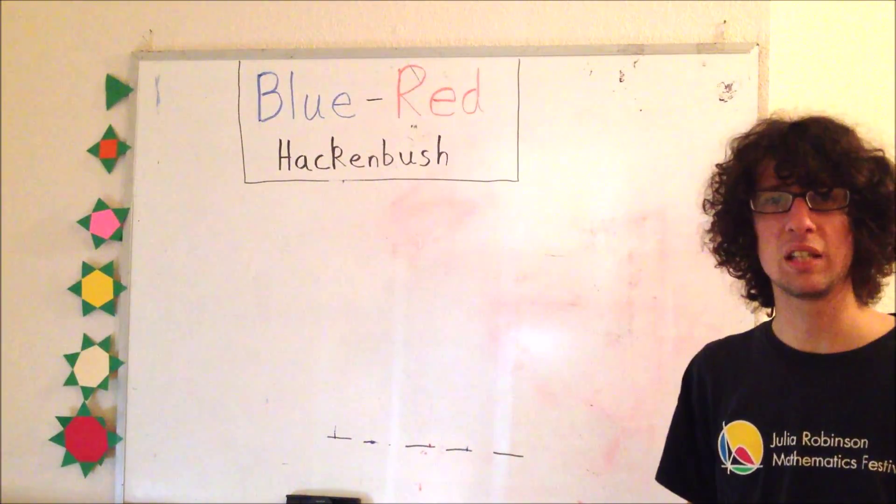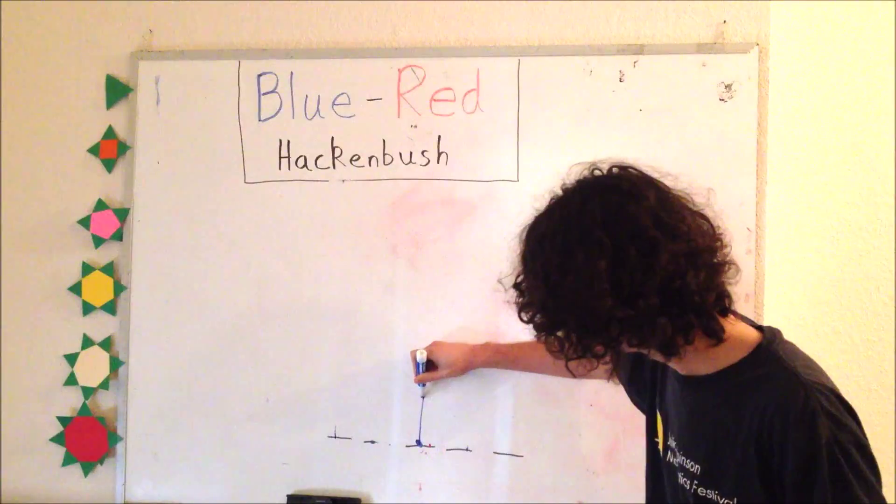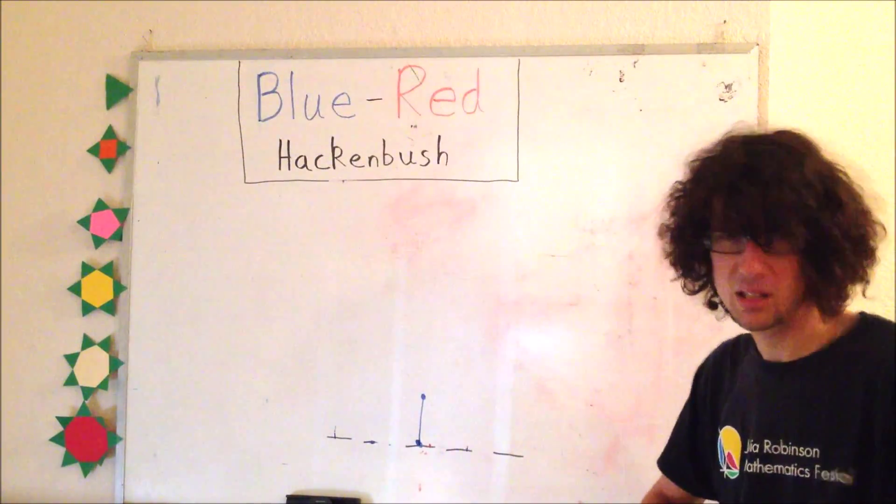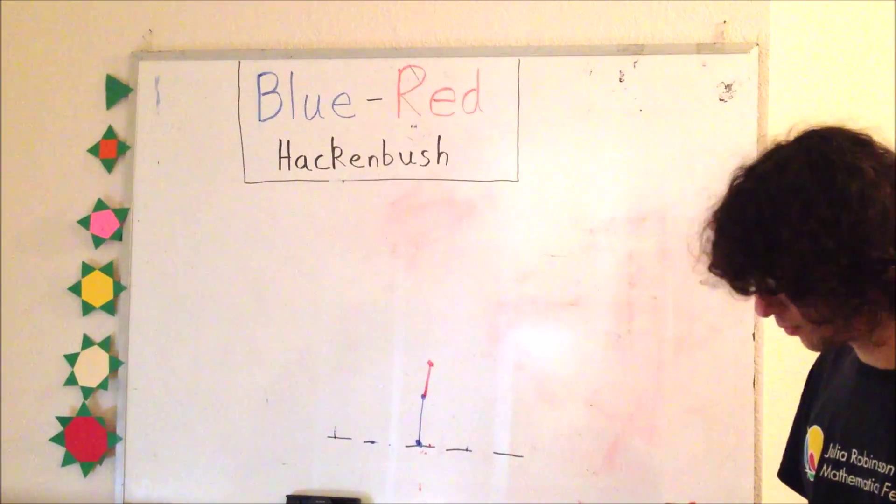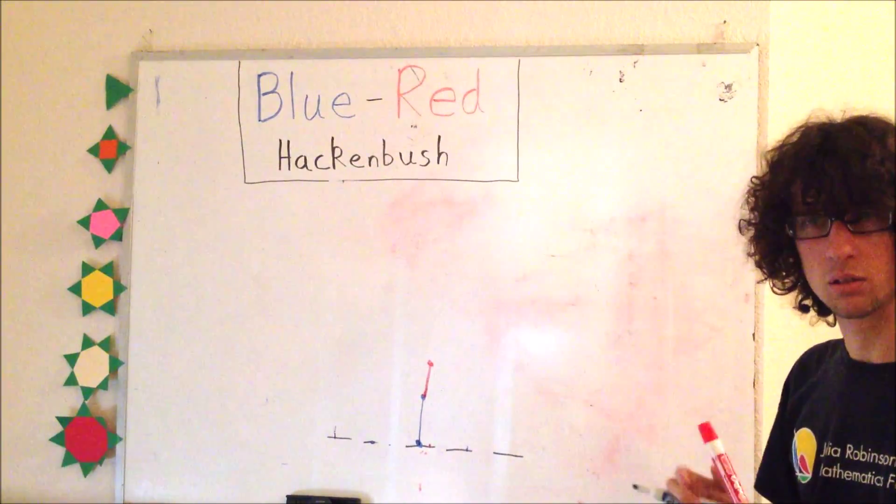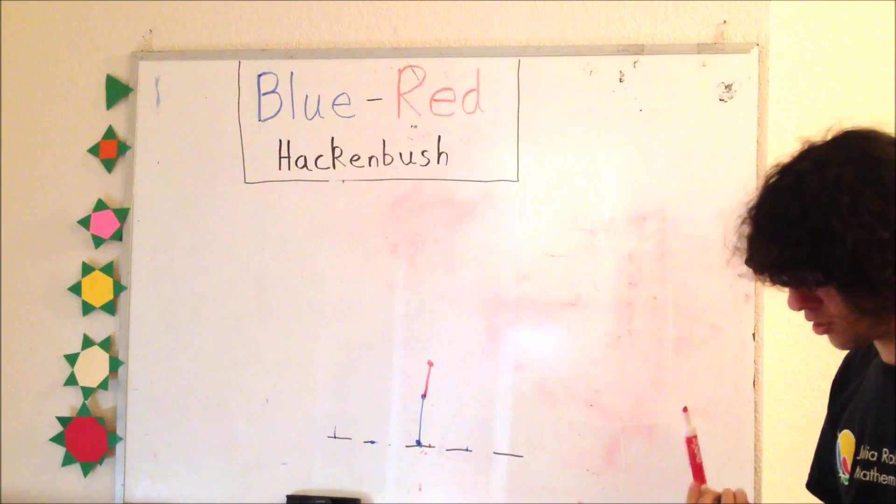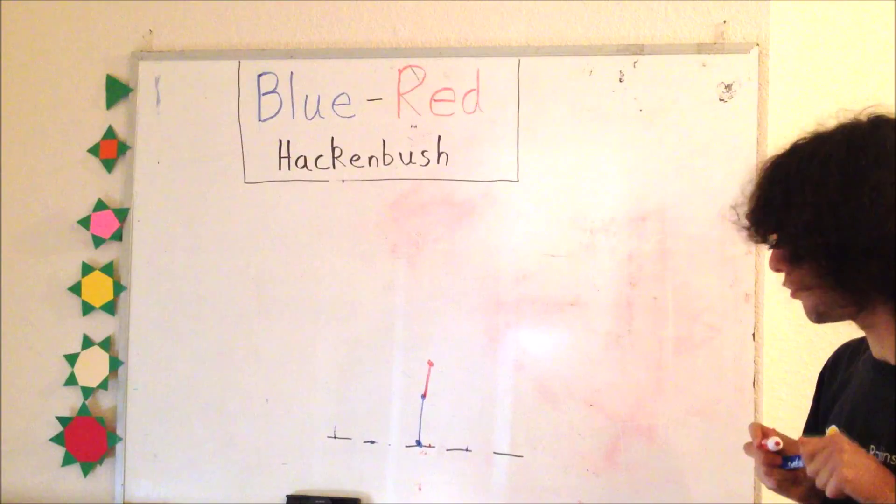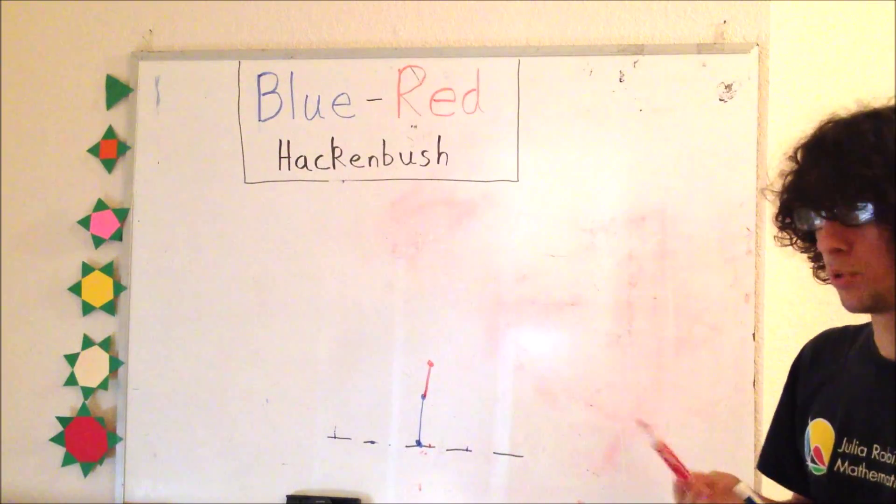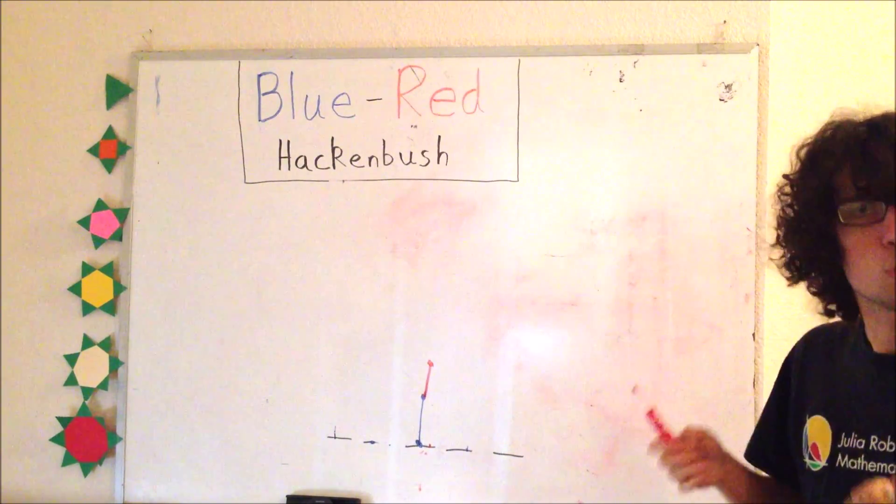Things become a little bit less clear if I make something a little bit more complicated. What happens here? If blue goes first, blue wins. If red goes first, blue wins. This game's winning for blue.